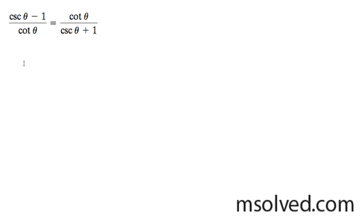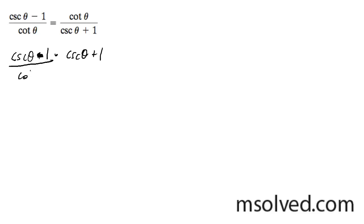Prove via trig identity. Start by taking the conjugate of the numerator: cosecant theta minus 1, times cosecant theta plus 1. Then we get cotangent theta times cosecant theta plus 1.